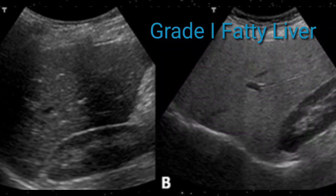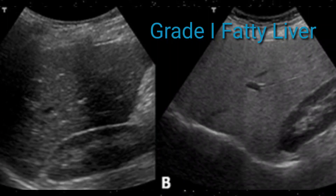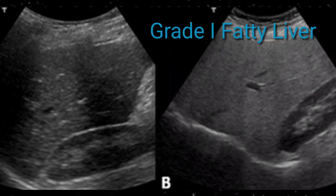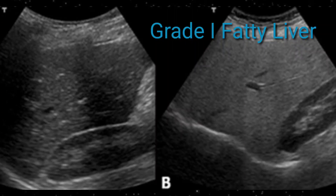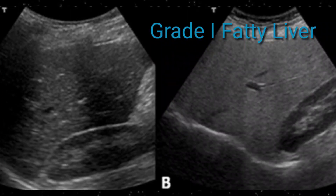This image shows a comparison of liver echogenicity with renal cortex echogenicity for fatty changes. On the right side, liver echogenicity is equal to renal cortex with no fatty infiltration. On the left side, liver echogenicity is increased compared to the renal cortex. In Grade 1 fatty liver, the liver appears echogenic and intrahepatic vascular markings are visible — you can appreciate the portal veins with their echogenic walls and also the hepatic veins.